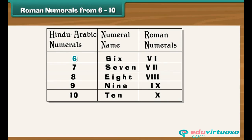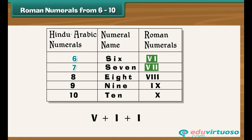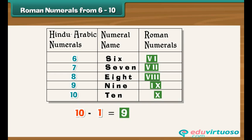We know that 6 can be expressed as 5 plus 1. Therefore, 6 is written as VI, meaning 5 plus 1. Similarly, 7 is written as VII, meaning 5 plus 2. 8 is VIII. 9 is IX, and 10 is X. Since 9 is 10 minus 1, it is written as IX, meaning 1 less than 10.